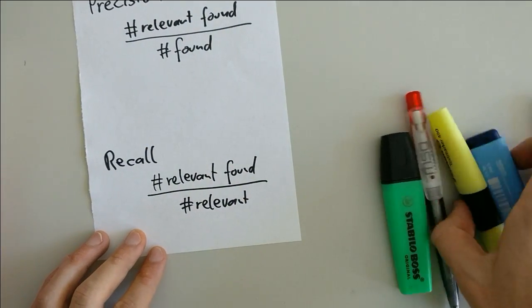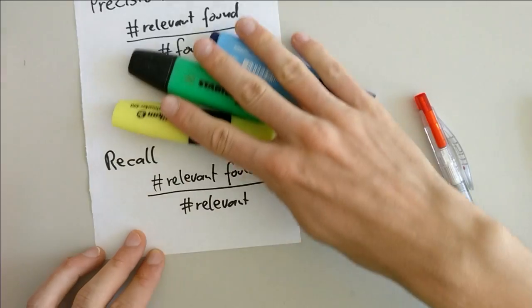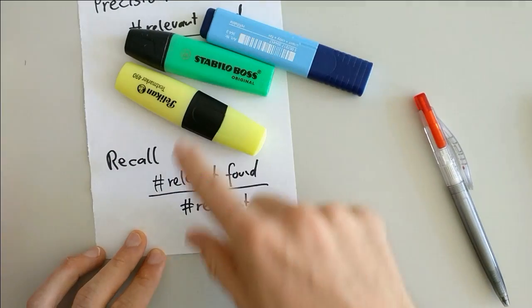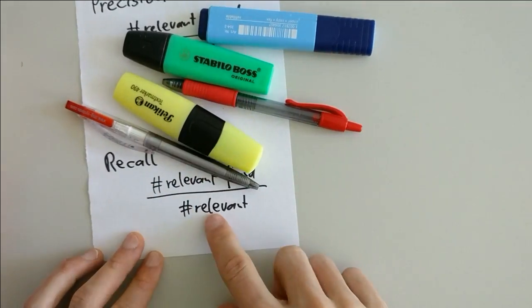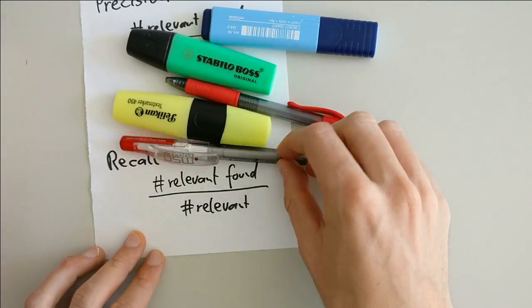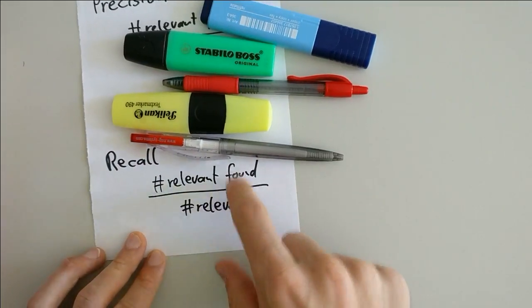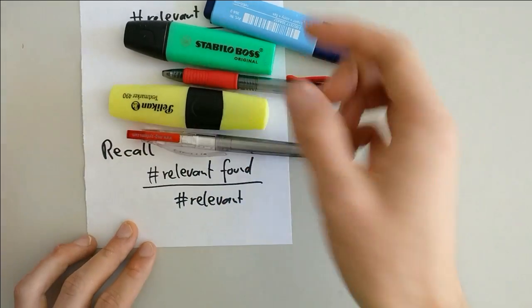A perfect recall would be this: all relevant items are found. Three relevant items found, three are relevant in total. But this is also a perfect recall of one. All items which were relevant were also found.